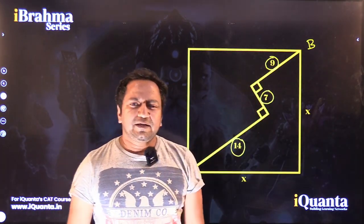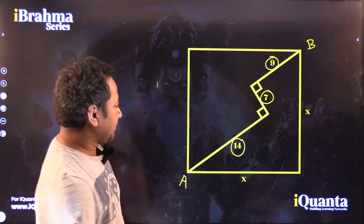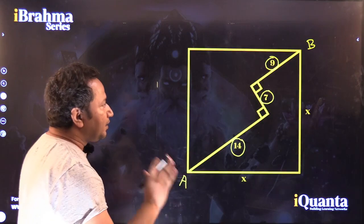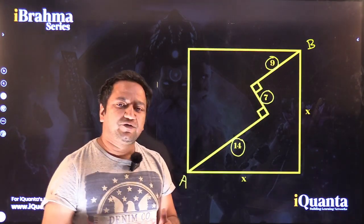and that line was 7 units of length. So what was he trying to do? He was trying to make the diagonal, right? Like if I join A and B, I will get the diagonal of the square and this is the line on which we have to think.